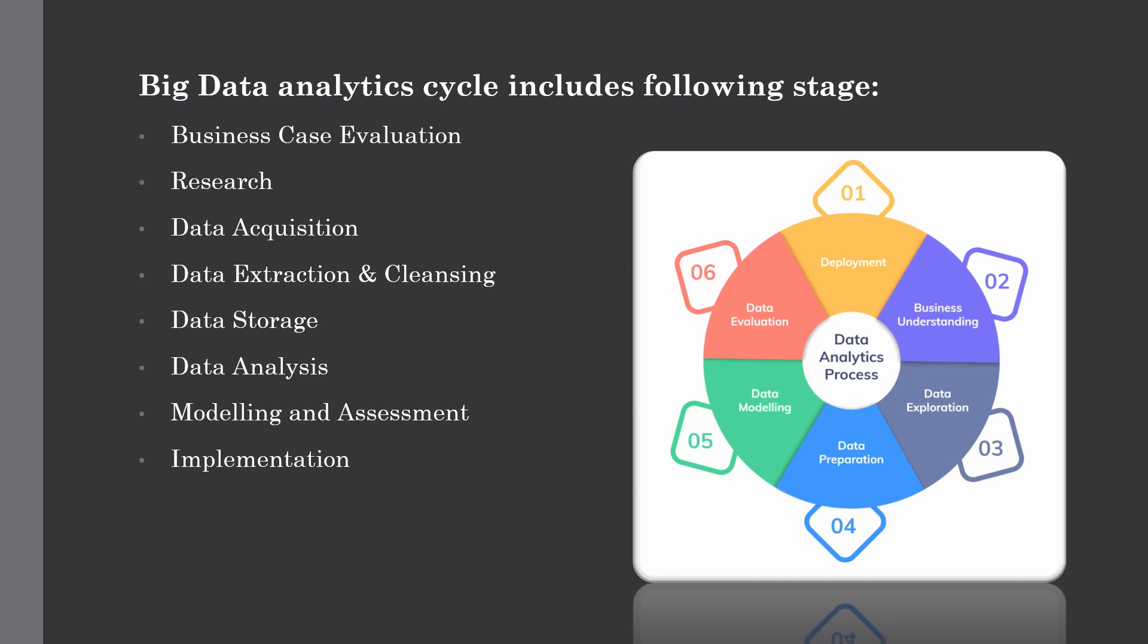The next stage is data storage. Once the data is processed, it sometimes needs to be stored in a database. Big data technologies offer plenty of alternatives regarding this point. The most common alternative is using the Hadoop file system, which is HDFS for storage, which will provide users a limited version of SQL known as Hive query language. What is Hive and how to use it, we will see in our upcoming tutorials. This will allow most analytic tasks to be done in a similar way as would be done in the traditional BI data warehouse. This stage of the cycle is related to human resource knowledge in terms of the abilities to implement different architectures.